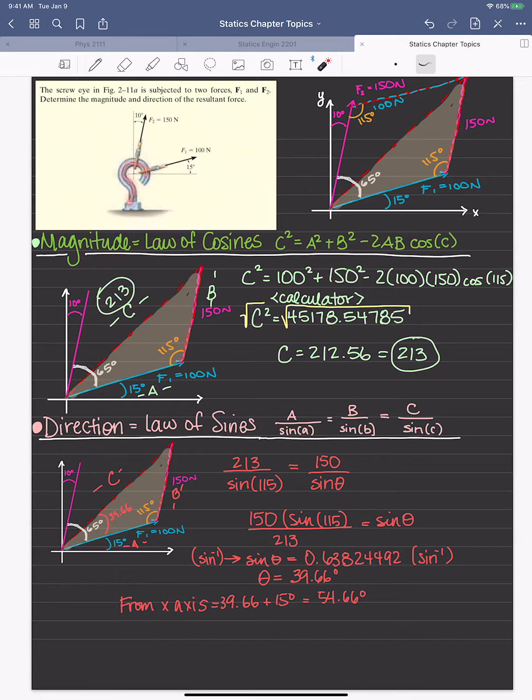This here is a hook screw eye. The first thing I do is we have the x and y planes here. We draw the vectors, I kind of recreated it, and then draw a parallelogram.